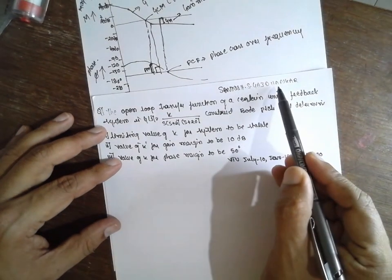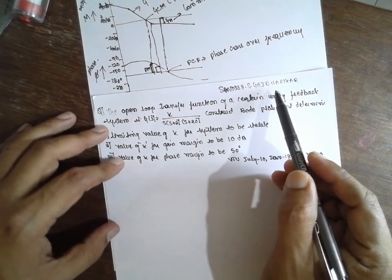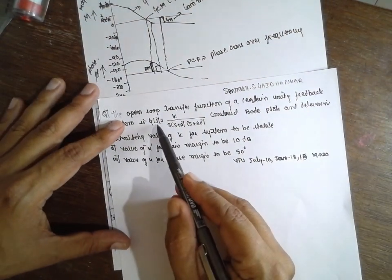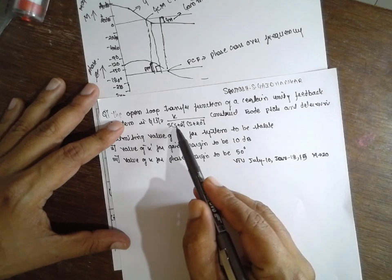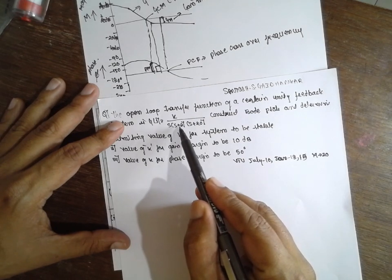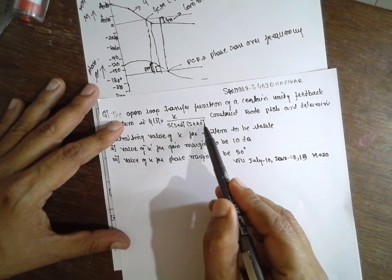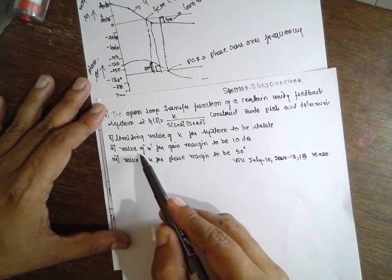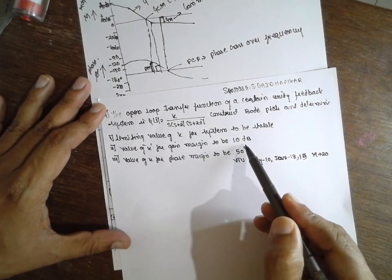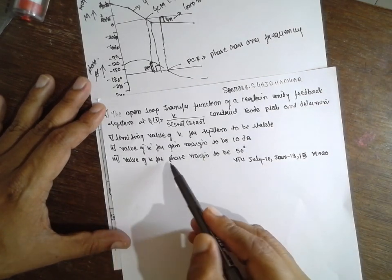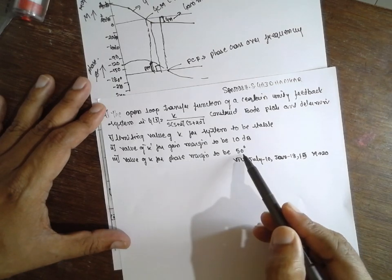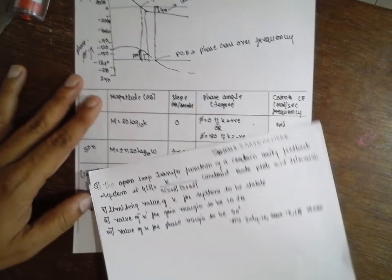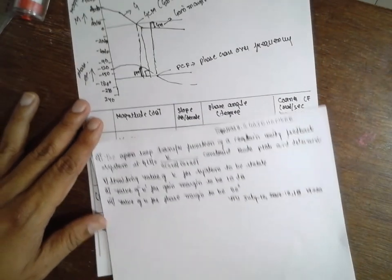I am Satyash Radhankar. Today I am teaching you the Bode plot. This is the problem: G of s equals K divided by s times (s plus 2) times (s plus 20). Here we have to find out the value of K when the gain margin is 10 dB and the value of K for the phase margin to be 50 degrees. This is the problem and this is the procedure I am following, same as the previous problems.